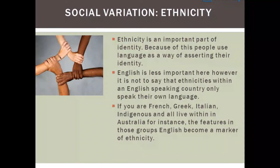Social variation — ethnicity. Ethnicity is an important part of identity. Because of this, people use language as a way of asserting their identity. English is less important here; however, it is not to say that ethnicities within an English-speaking country only speak their own language. If you are French, Greek, Italian, or indigenous and all live within Australia, for instance, the features of those groups' English become a marker of ethnicity.